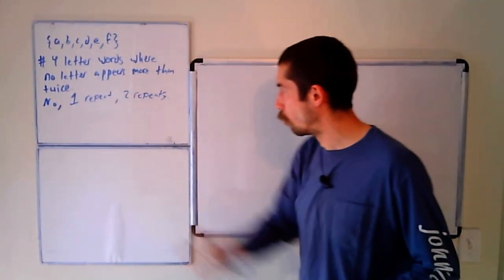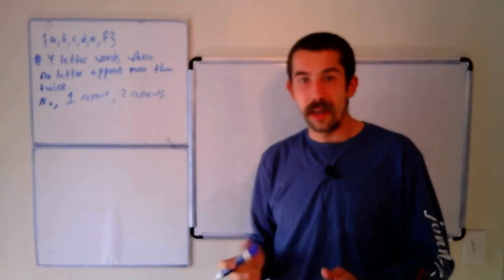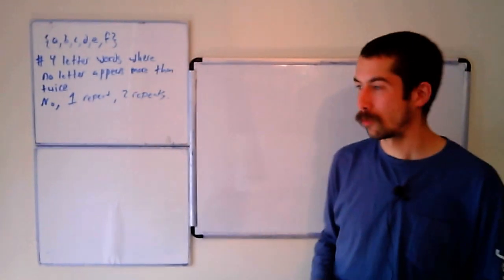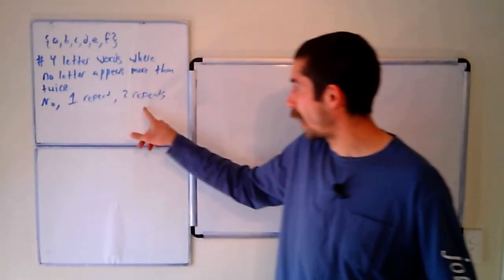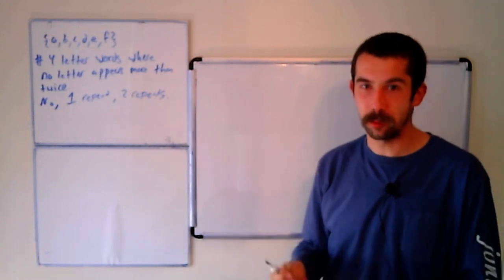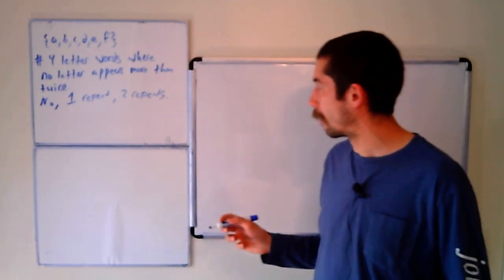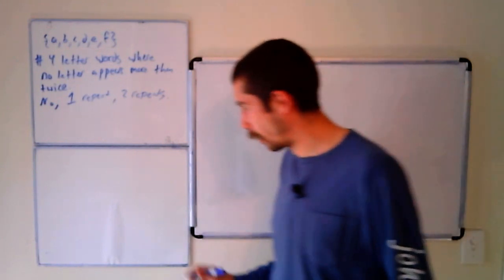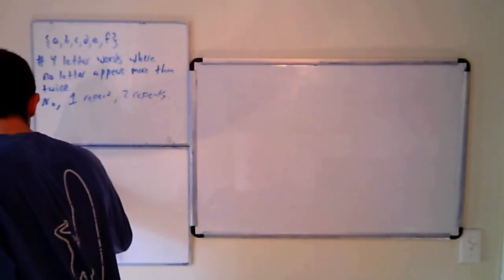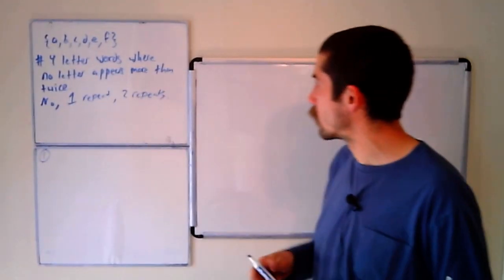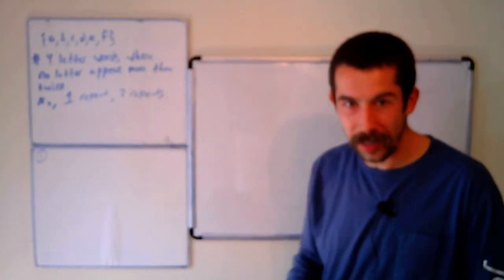And these are clearly disjoint cases, so there's no overlap. If we can count each of these three cases, then our total answer will just be the sum of those three numbers. Let's start with case one, no repeats. This is the easiest case, in my opinion. How many four-digit numbers are there out of these six letters where there's no repeats?